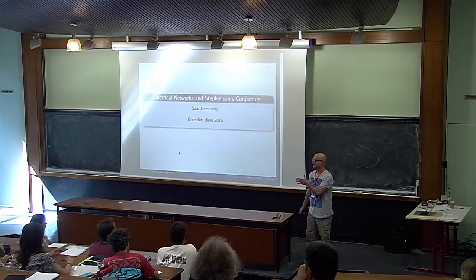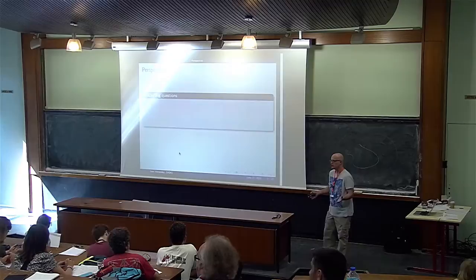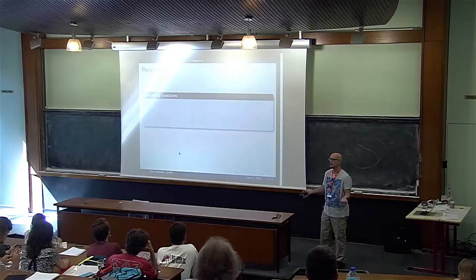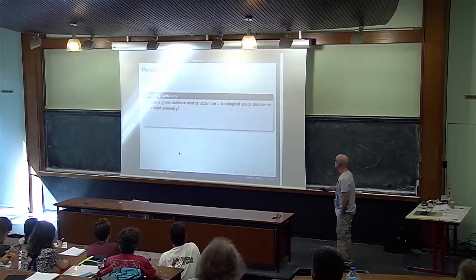It's the last talk of today. I want to start with two motivating questions that are a little bit vague, but I'm going to give examples right away to clarify what I mean. The first one is: can a given combinatorial structure on a topological space determine a rigid geometry? Think about the combinatorial structure, for instance, as a triangulation.